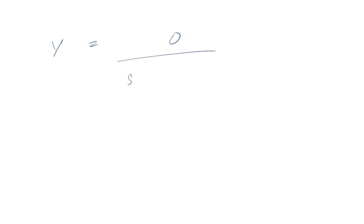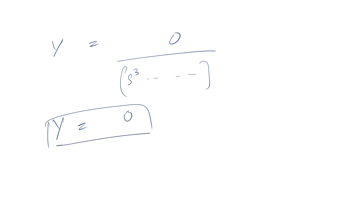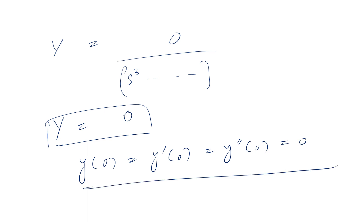Dividing both sides by the s-polynomial, Y equals 0. This means that because all boundary conditions — y(0), y prime(0), and y double prime(0) — are given as 0, the answer is simply y equals 0. Thank you guys for the lesson.